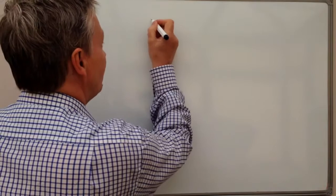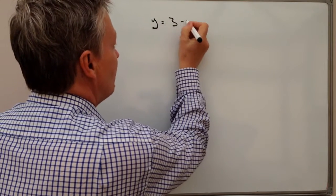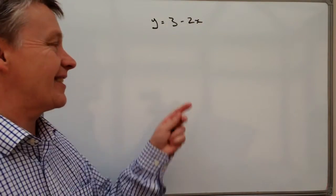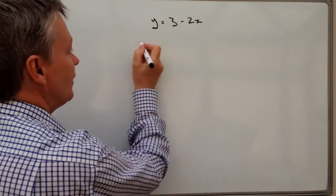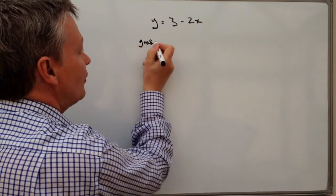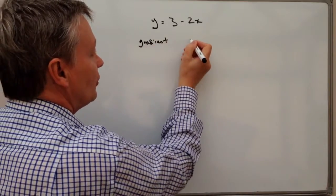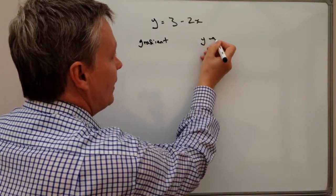But the problem is, it says to you y equals three minus two x, and what they want you to do is to write down the gradients, so write this down, the gradients, and also write down the y-intercept.